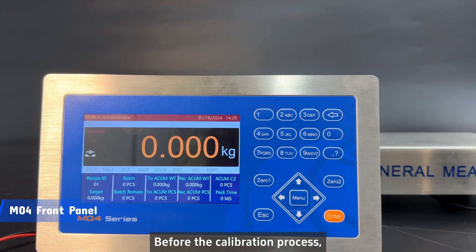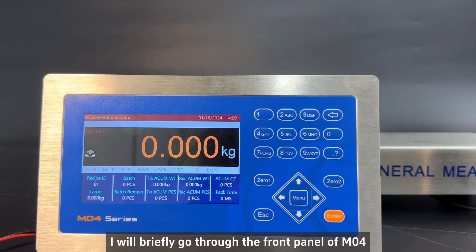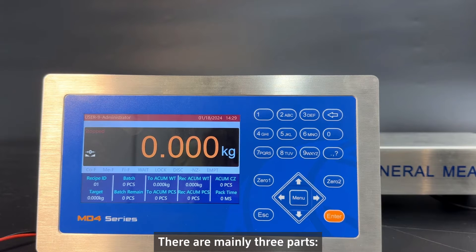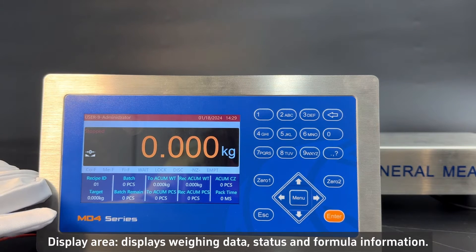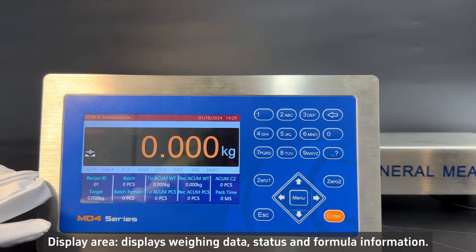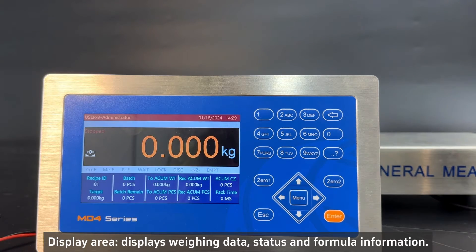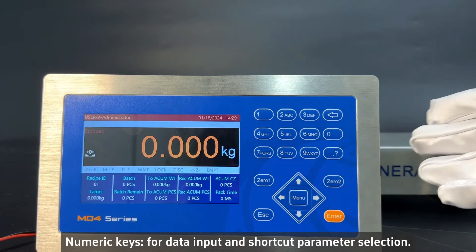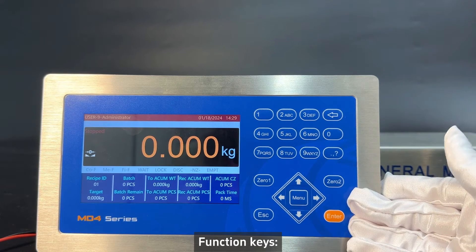Before the calibration process, I will briefly go through the front panel of M04. There are mainly three parts: Display area displays weighing data, status and formula information, numeric keys for data input and shortcut parameter selection, and function keys.